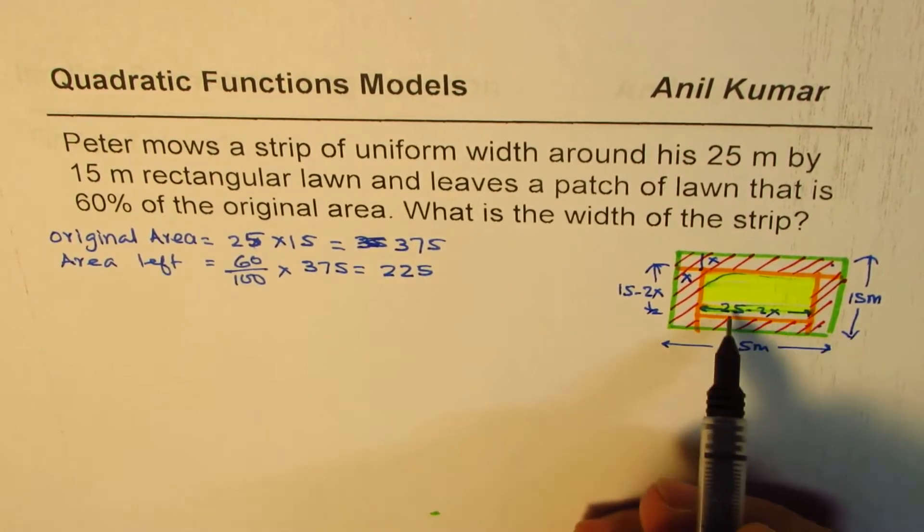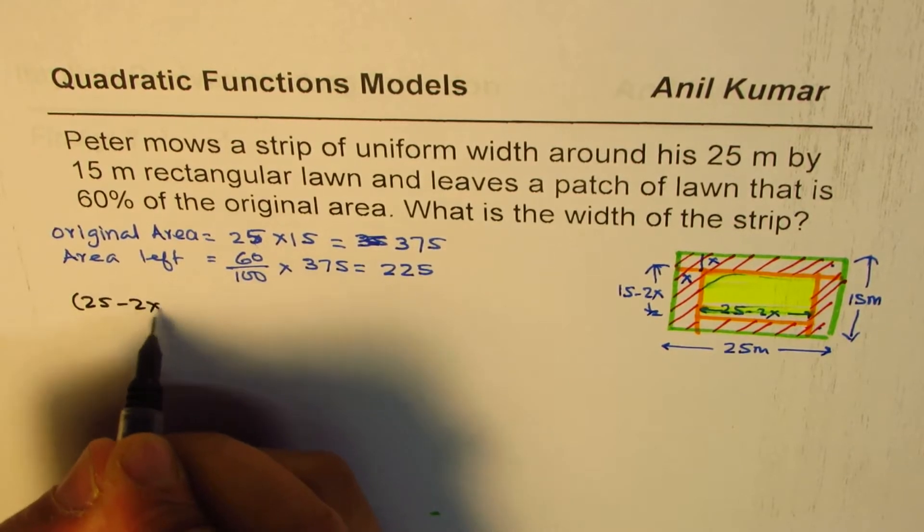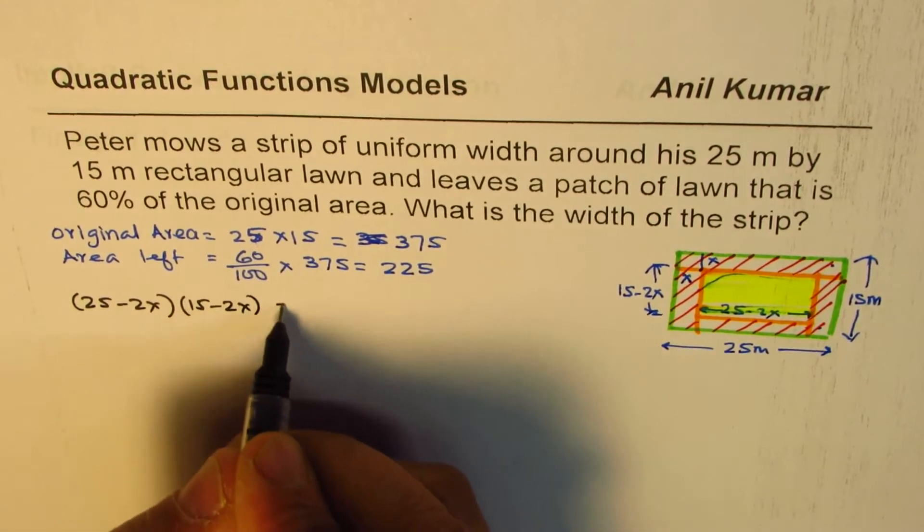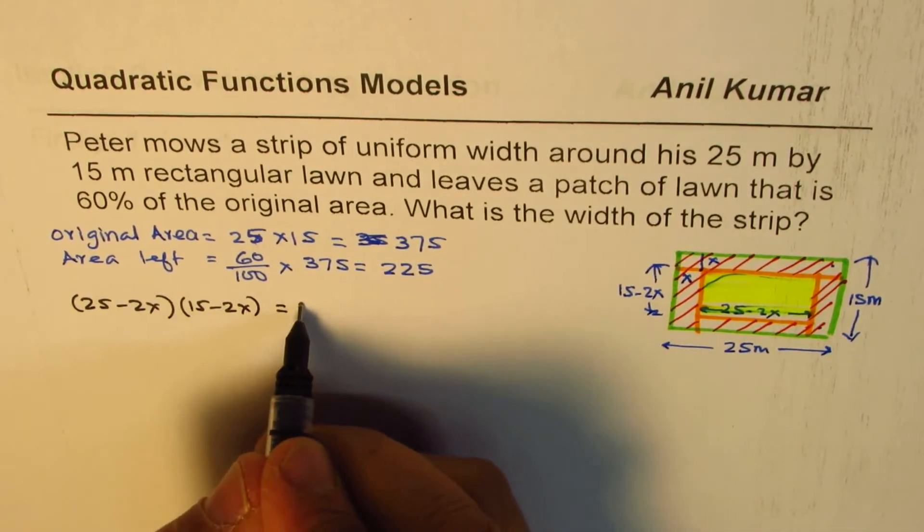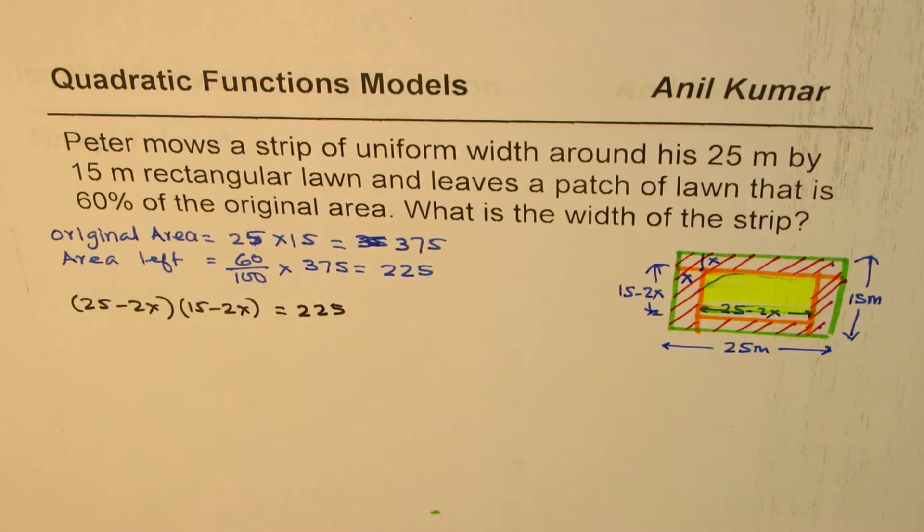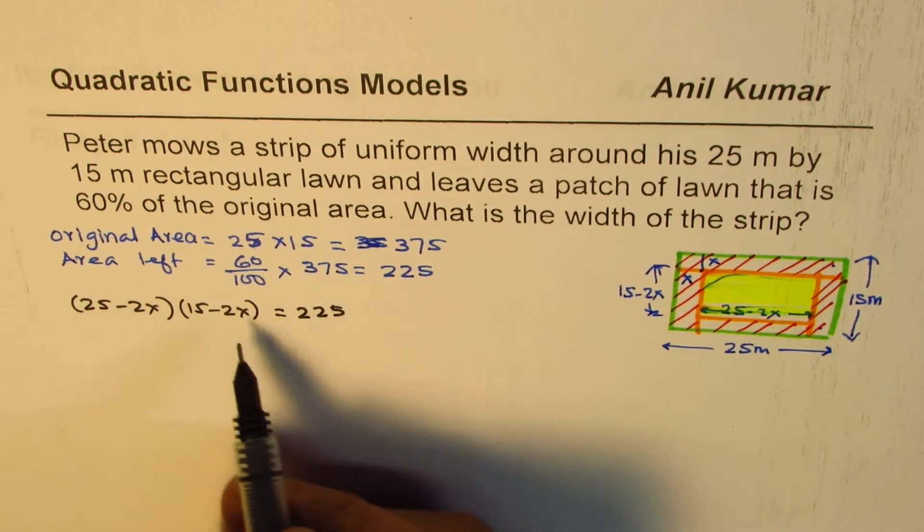Length of this is 25 minus 2x, so we have (25 - 2x) times (15 - 2x) and that should equal 225. That gives you the equation of the inside area, and that is a quadratic equation.